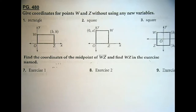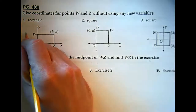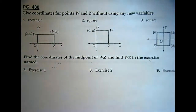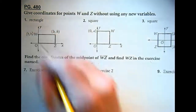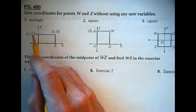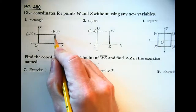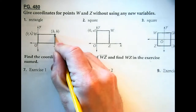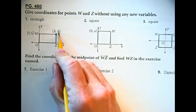W equals (0, h). Where did you get the 0? Because it's on the y-axis, which is x equals 0. And the h? Because we follow that y value over and it hits the same point, so we have h. So W is at (0, h).